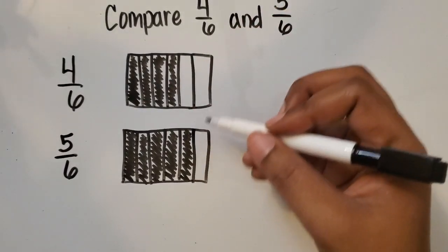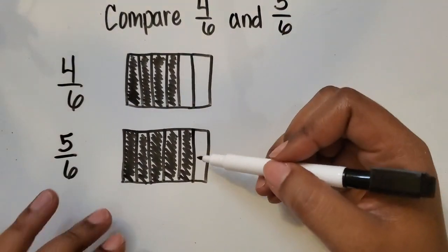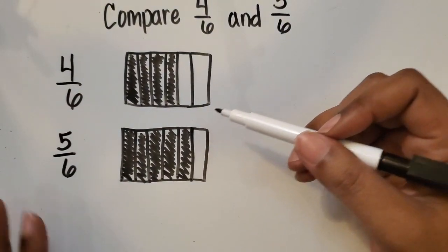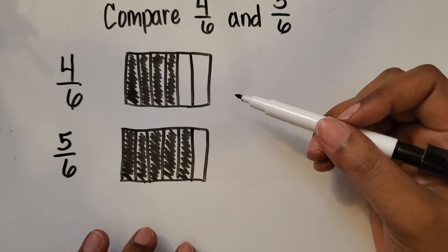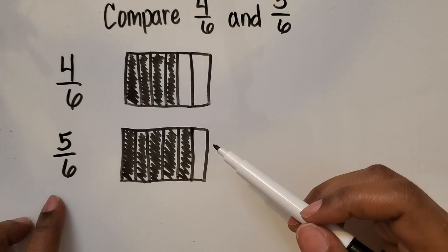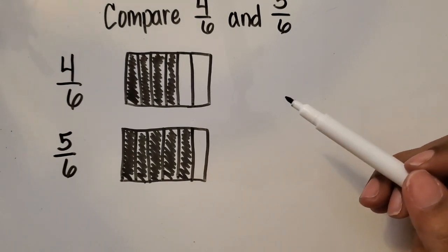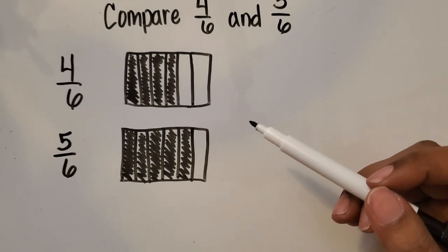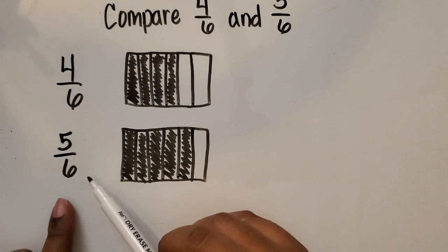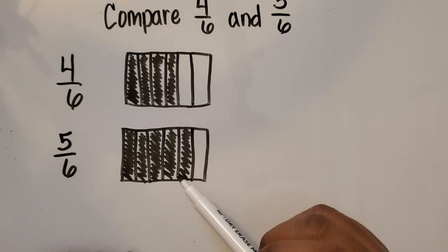So comparing these two wholes — one on top, one on the bottom — we can clearly see which fraction takes up more space of that whole. 5/6 is greater than 4/6.